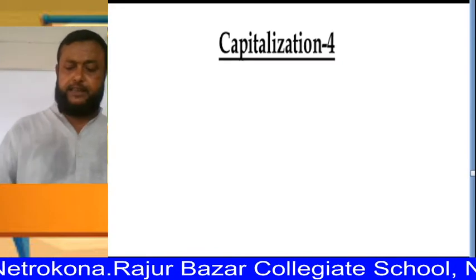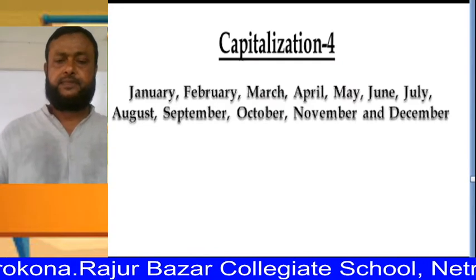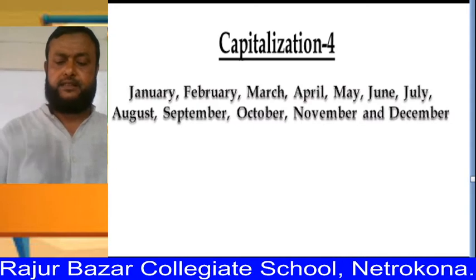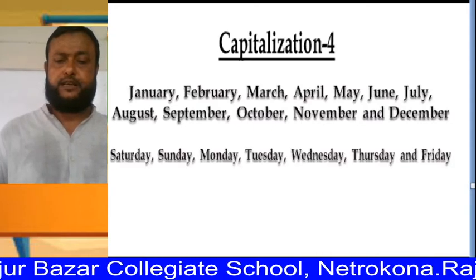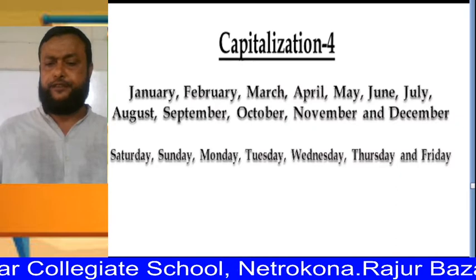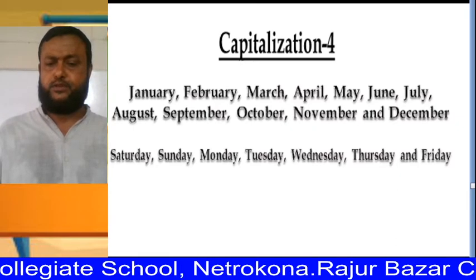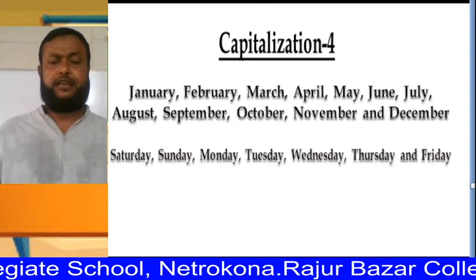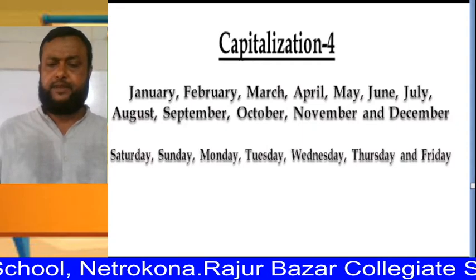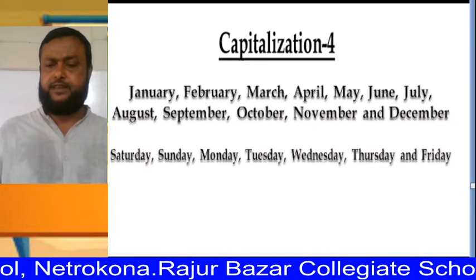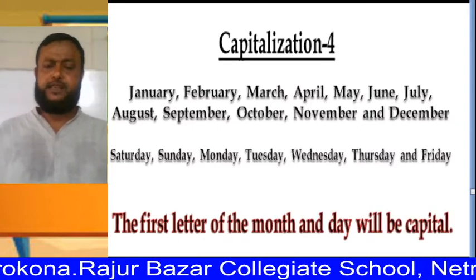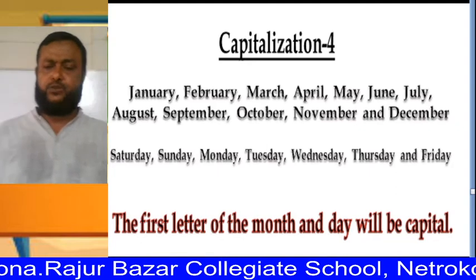Capitalization rule number four. We look at the names of months and days of the week. Names of months: January, February, March, April, May, June, July, August, September, October, November, and December. Names of days of the week: Saturday, Sunday, Monday, Tuesday, Wednesday, Thursday, and Friday. The first letter of the name of a month and a day will be capitalized.